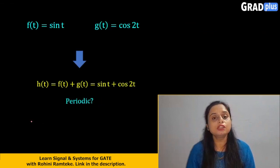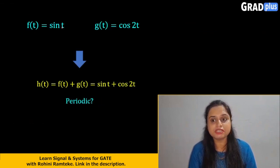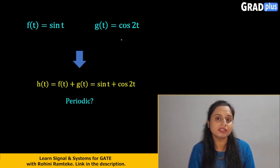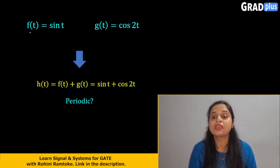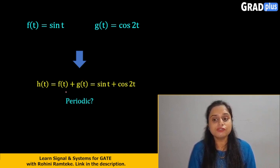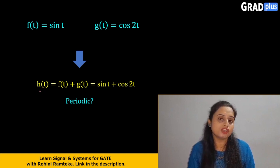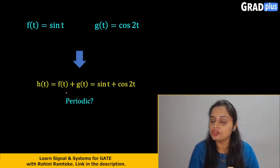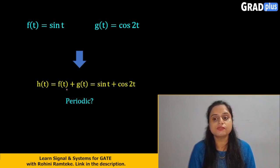For that, consider the two signals here. One signal is given as f(t) which is nothing but sin(t), and g(t) which equals cos(2t). Here, sine and cosine are nothing but your periodic signals. So if we add these two signals, we will see whether the result is periodic or not. The addition of these two is denoted as h(t), so h(t) = f(t) + g(t).